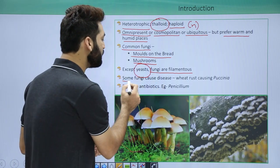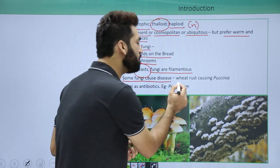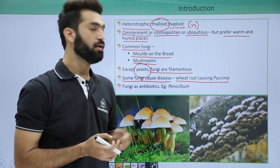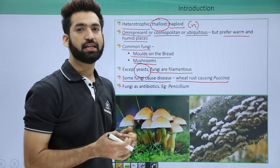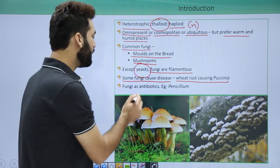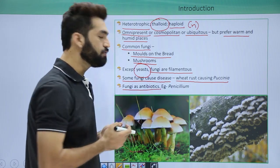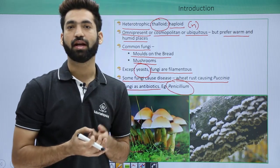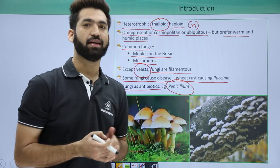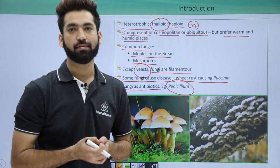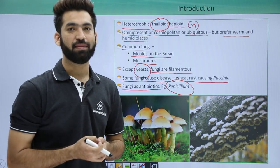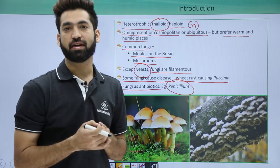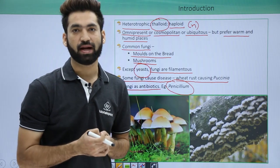Some fungi cause disease. One very important disease is wheat rust, caused by Puccinia graminis. This organism infects wheat and causes different types of rust. There are also fungi used for production of antibiotics — penicillin, which is used to kill bacteria, is obtained from Penicillium notatum or Penicillium chrysogenum, which inhibit the growth of bacteria.